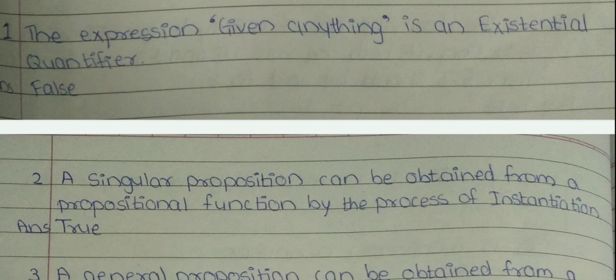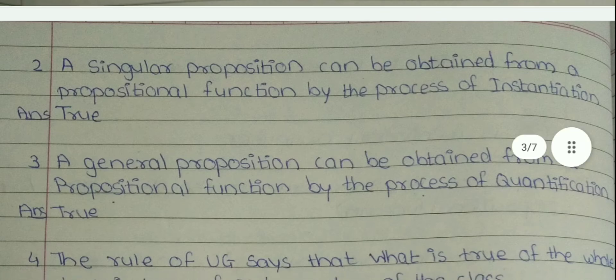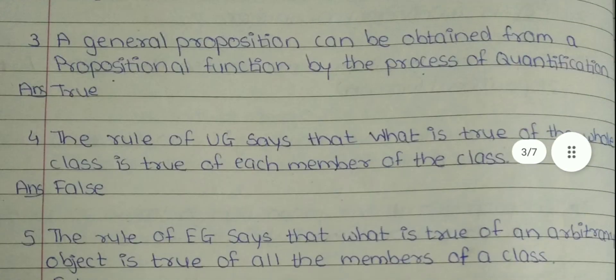16. Second, a singular proposition can be obtained from a propositional function by the process of instantiation. The answer is true. 16. Third, a general proposition can be obtained from a propositional function by the process of quantification. The answer is true. 16. Fourth, the rule of UG says that what is true of the whole class is true of each member of the class. The answer is false.